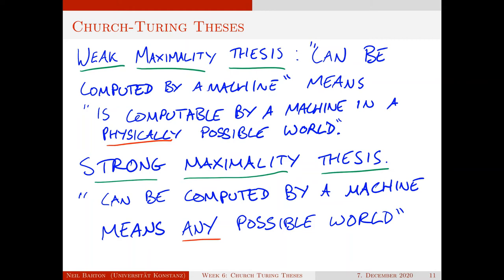There are at least two interpretations we might give to the maximality thesis, and this has to do with the kind of modality packed into the phrase 'can be computed by a machine.' We might interpret it in a weak sense — the weak maximality thesis — where 'can be computed by machine' means 'is computable by machine in a physically possible world.' Here we keep the laws of physics fixed, perhaps shift some conditions, allow more resources in terms of space, increase the physical number of atoms available as bits — but keep the laws of nature constant. There's also a much stronger version, where 'can be computed by a machine' means 'can be computed by a machine in any possible world,' letting our notion of possibility run wild with far more exotic kinds of machine.